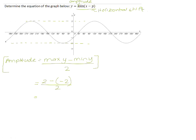2 subtract negative 2 is 2 add 2, which is 4, and 4 divided by 2 is 2. So we know that this graph will be y equals 2 sine of x.